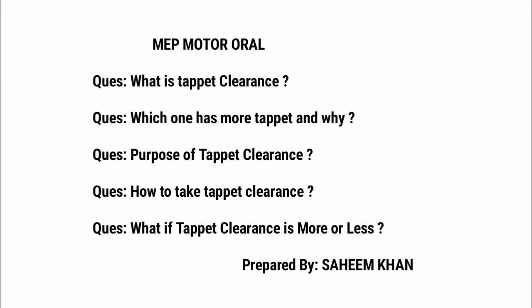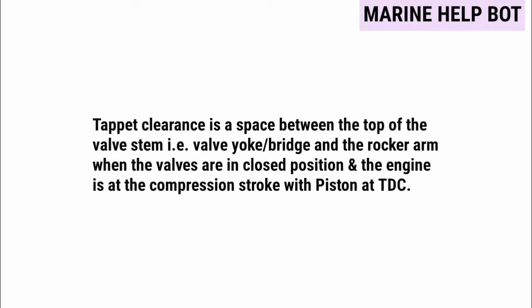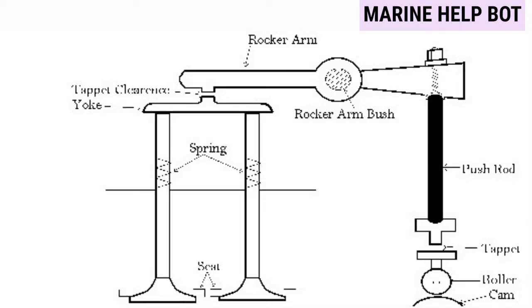Moving towards our first question: what is tappet clearance. This was the question asked to me in the orals. Tappet clearance is the space between the top of the valve stem and the rocker arm when the valves are in closed position and the engine is at compression stroke with piston at TDC. He asked about the valve stem — what we call it in four-stroke — and I told him 'valve bridge.'